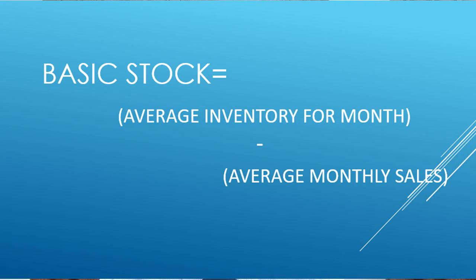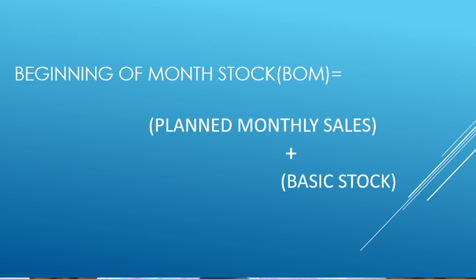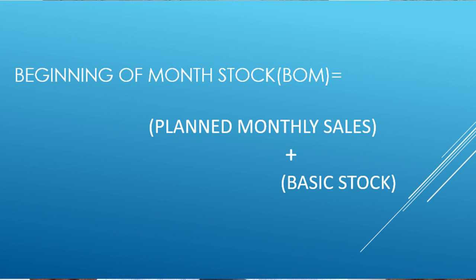Basic stock is equal to average inventory for the month minus average monthly sales. Beginning of month stock is equal to planned monthly sales plus basic stock.